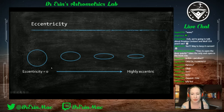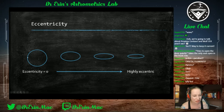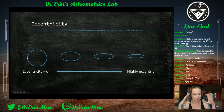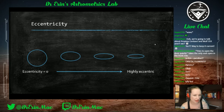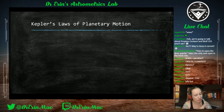Another key property of an ellipse is its eccentricity. If eccentricity equals zero, that's a perfect circle. As eccentricity increases, the ellipse becomes more and more flattened. When we say a planet or comet has a highly eccentric orbit, it means the orbit is a very flattened ellipse. For most planetary orbits, eccentricity is low — they're close to circular.